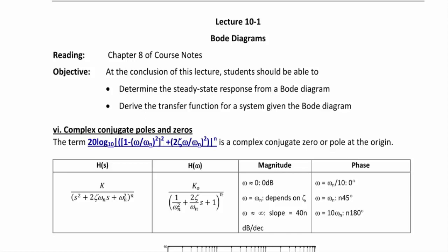For the phase, you would have omega equal to omega_n divided by 10 at zero degrees, or omega_n equal to omega_n with a slope of n times 45 degrees per decade, and omega equal to 10 omega_n at n times 180 degrees. Let's look at some examples of complex conjugate poles and zero Bode plots.